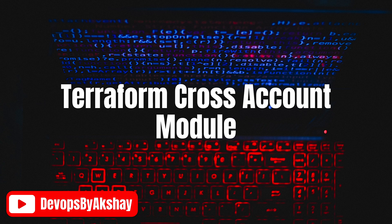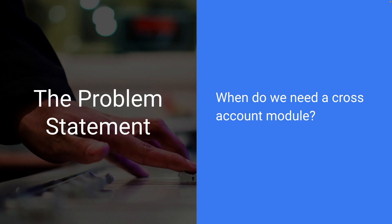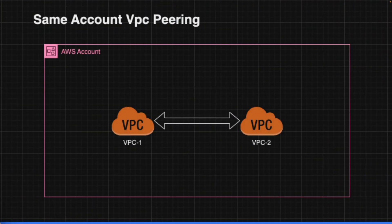Hello everyone, today we will see how to create a cross-account module in Terraform. But before starting, let's first understand why we need a cross-account module. To understand it better, I have taken an example of VPC peering in AWS. Here we have an AWS account in which I have two separate VPCs.